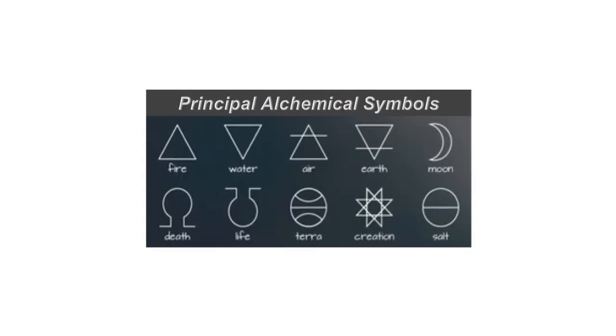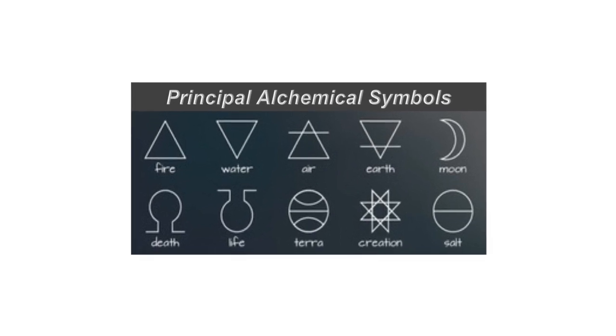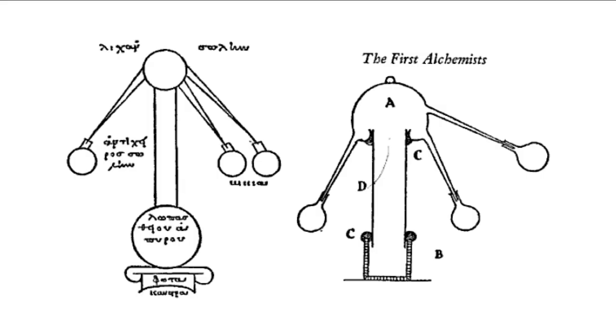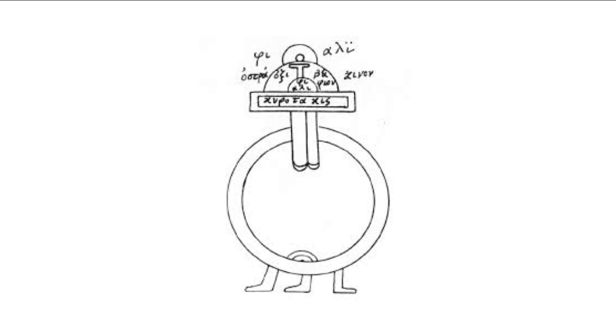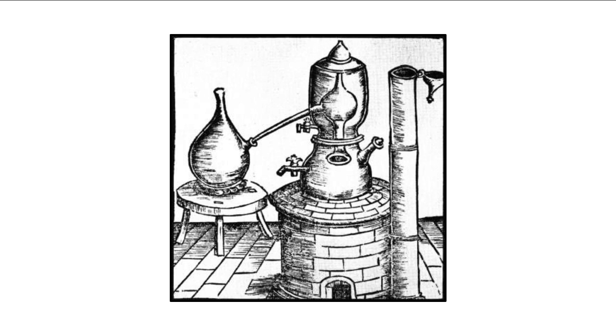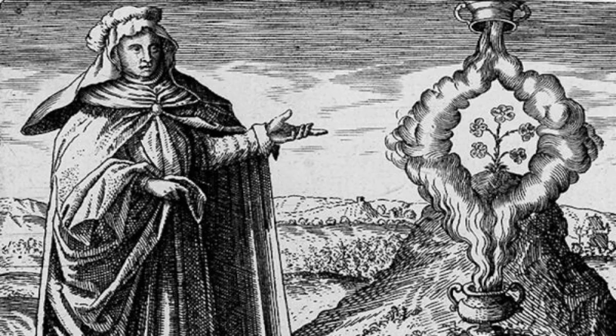She practiced alchemy, as modern chemistry had yet to emerge as a separate recognized discipline, and yet she invented several key apparatus that are still used in modern labs to this day, such as the tribicos, the keratatis, and the bain-marie that bears her name. She is also said to have first discovered hydrochloric acid. She was a scientist and a visionary.